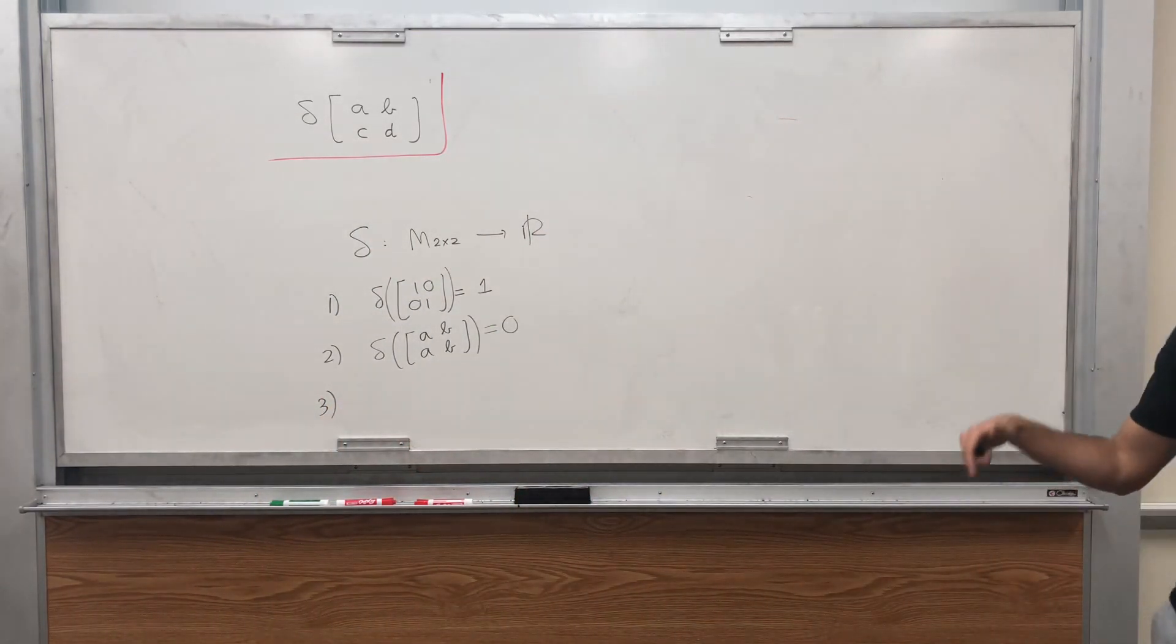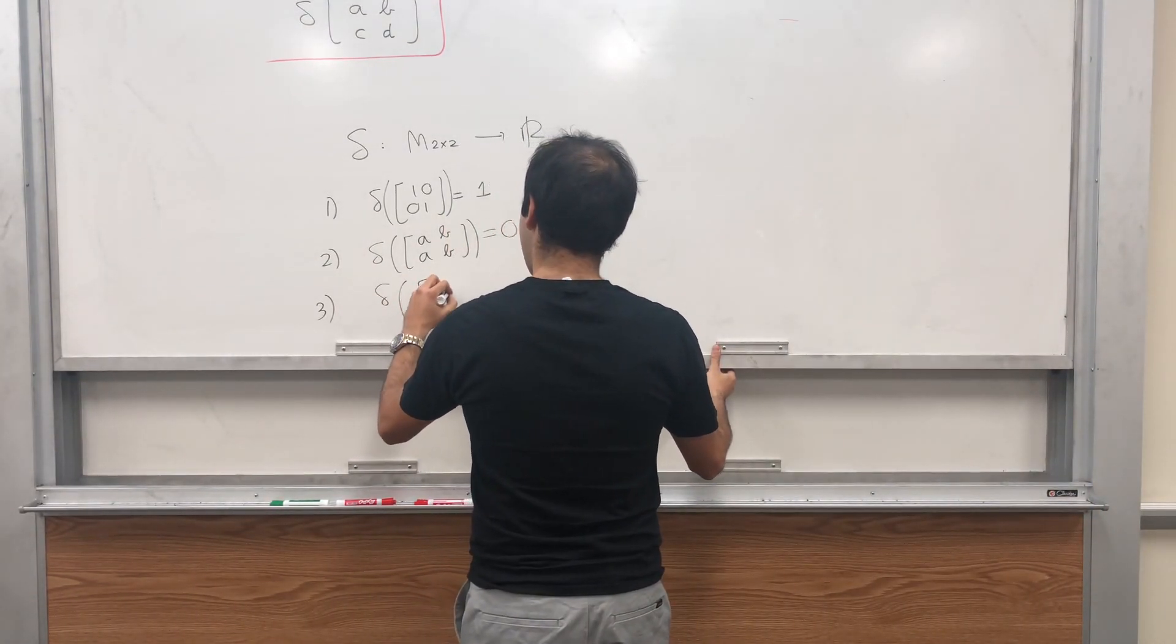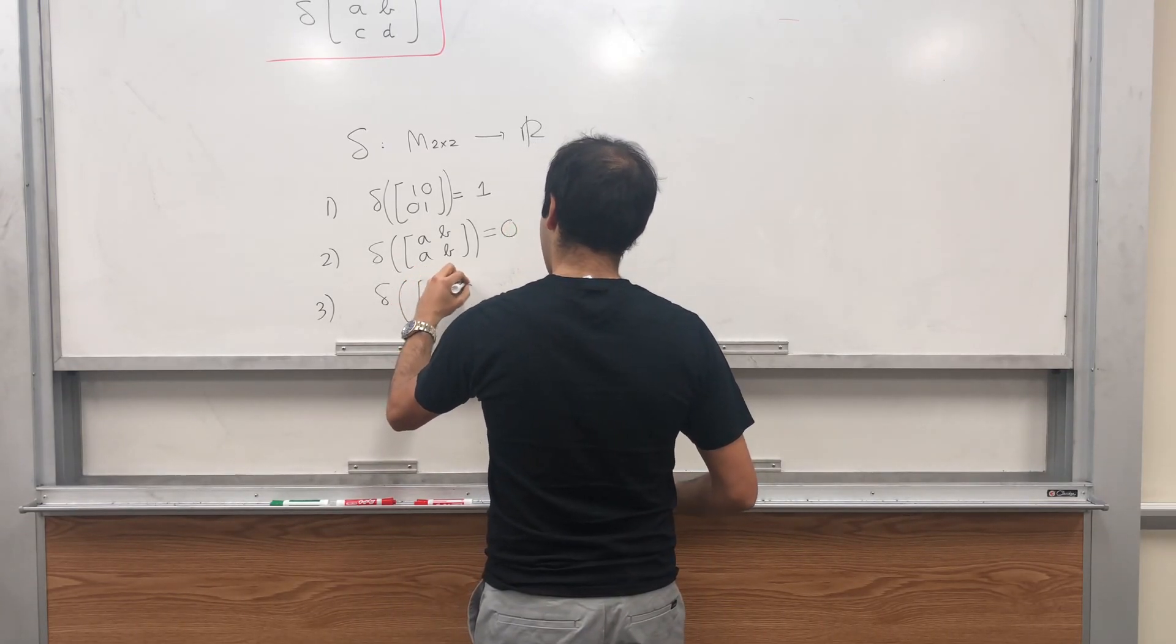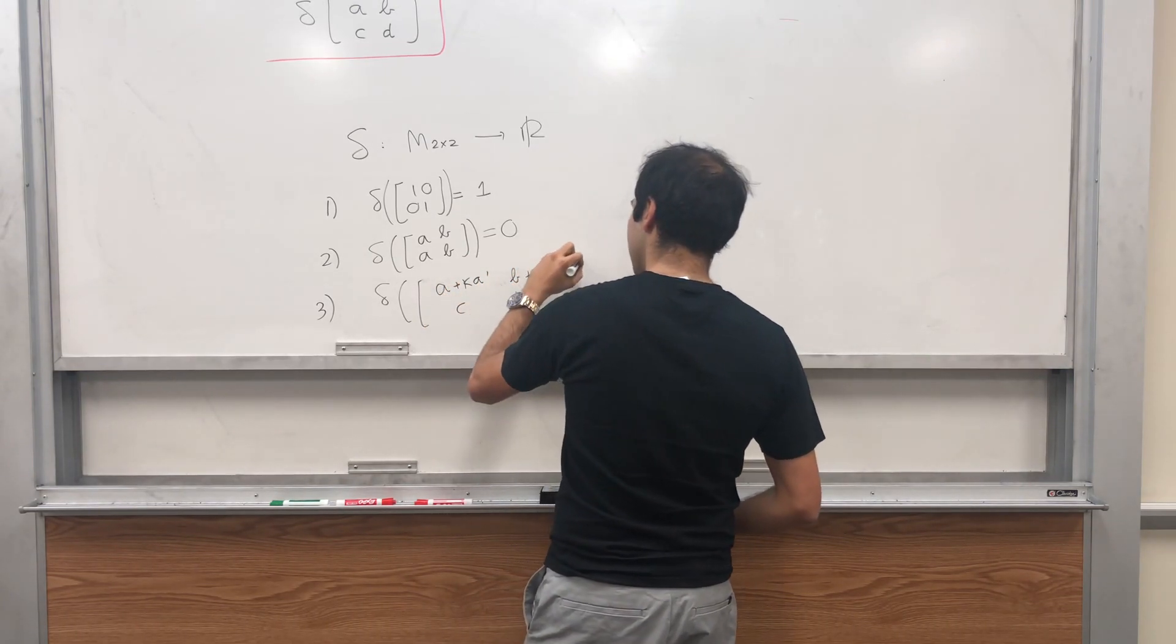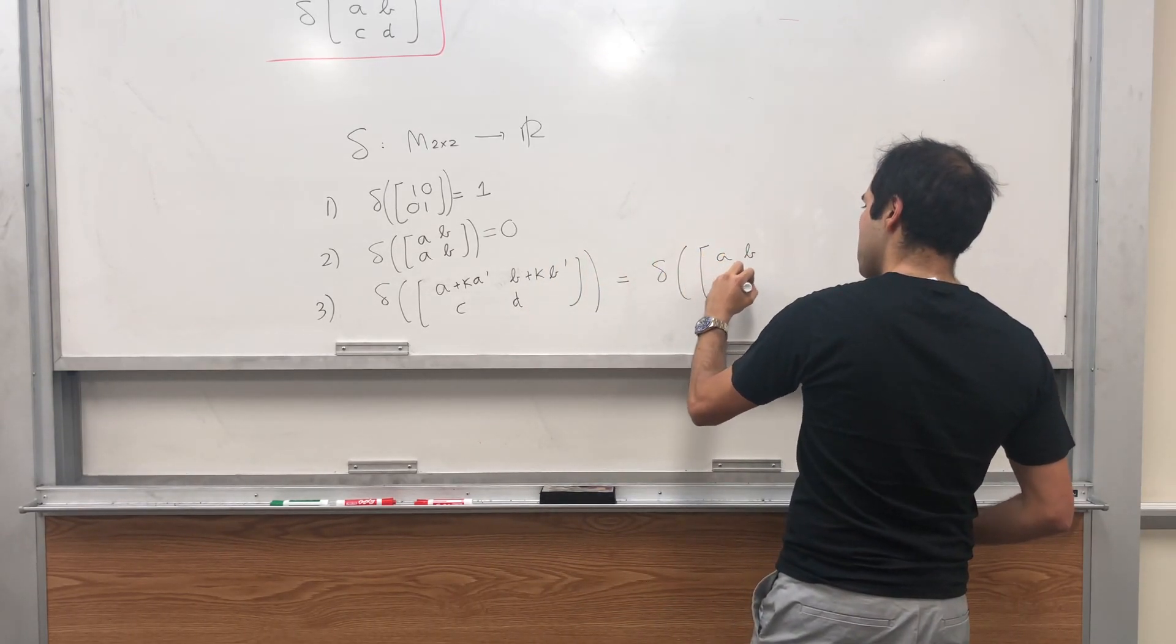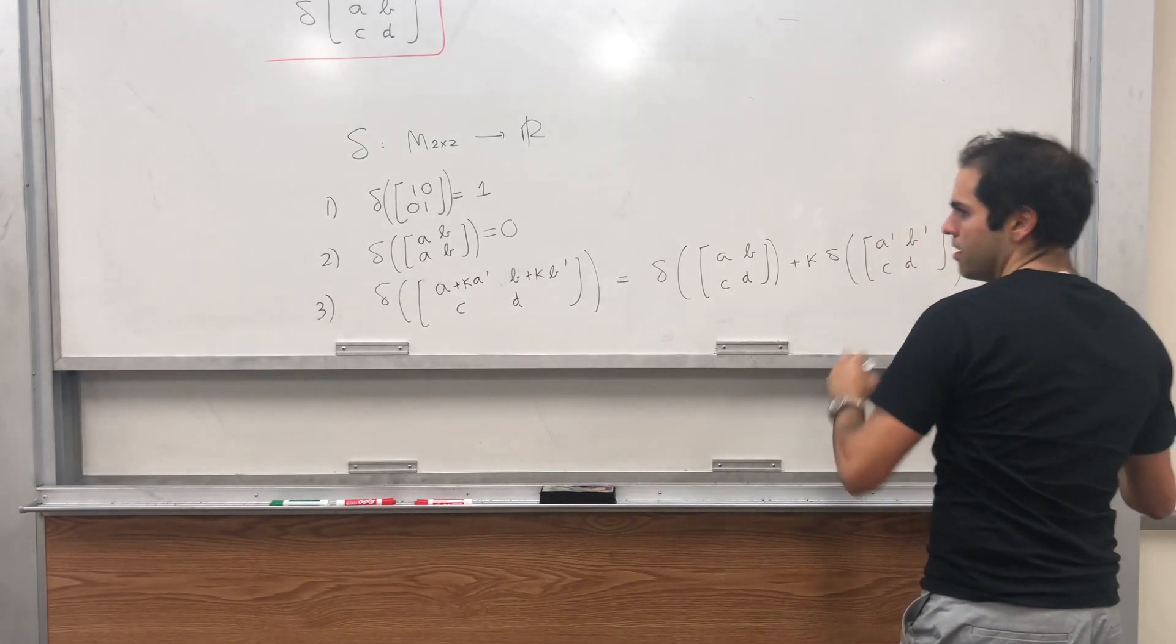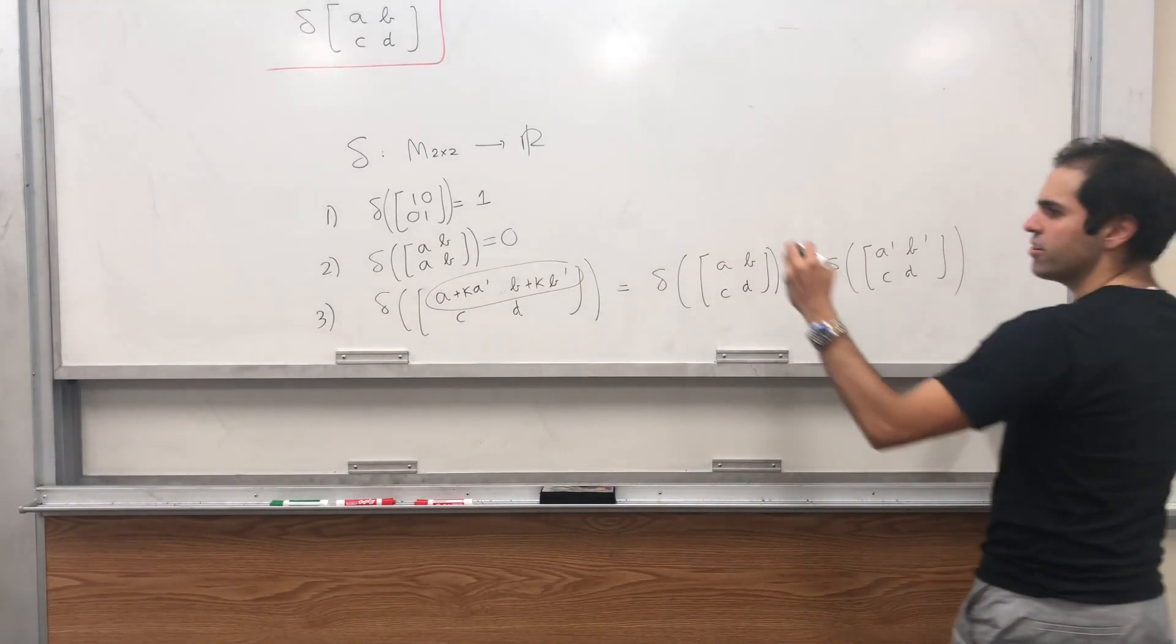And lastly, delta is linear in each row. In other words, if you do delta of A plus kA prime, B plus kB prime, and CD, that is the same thing as delta of ABCD plus k times delta of A prime, B prime, CD. Suppose it's linear in the first row.